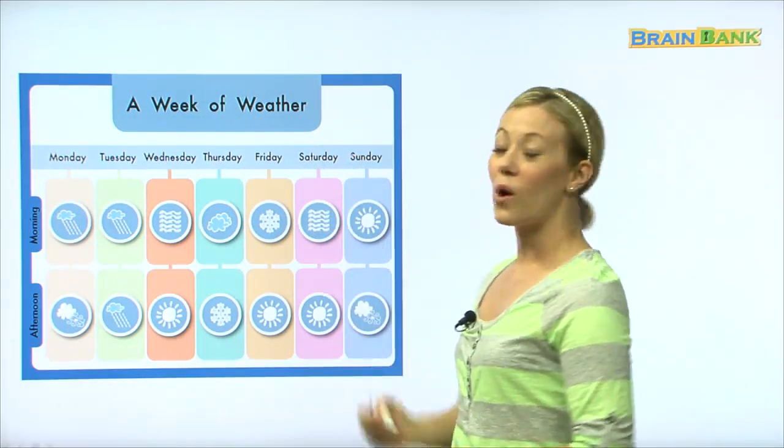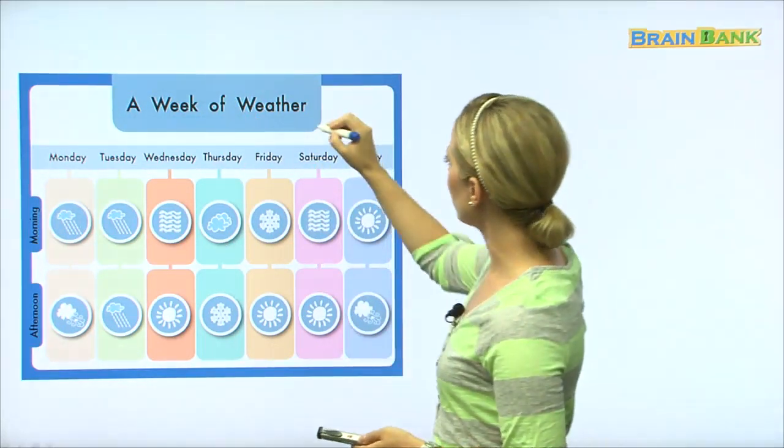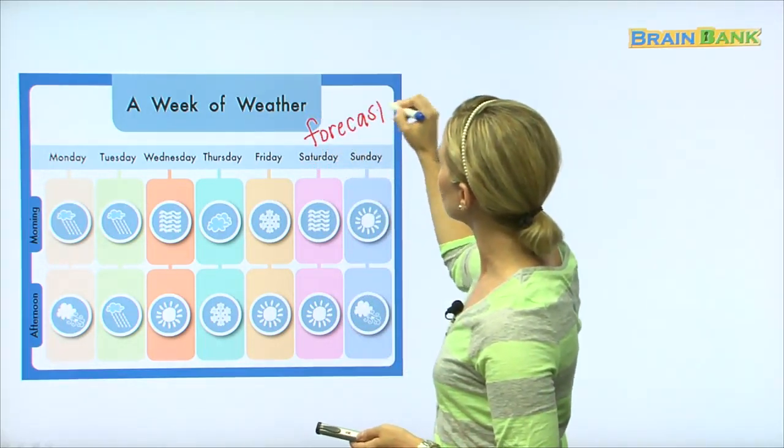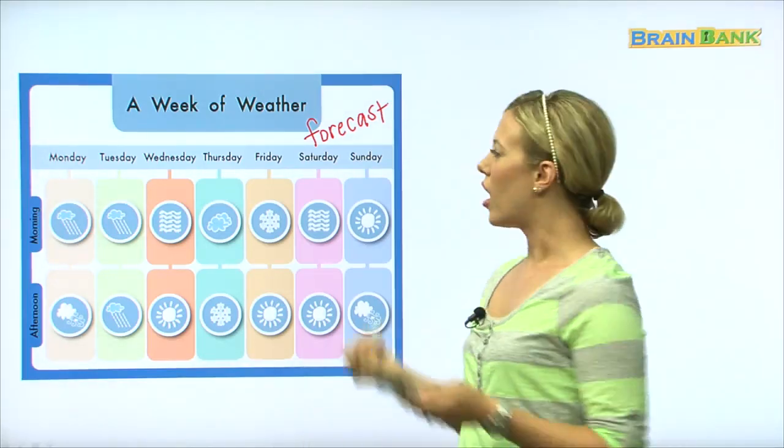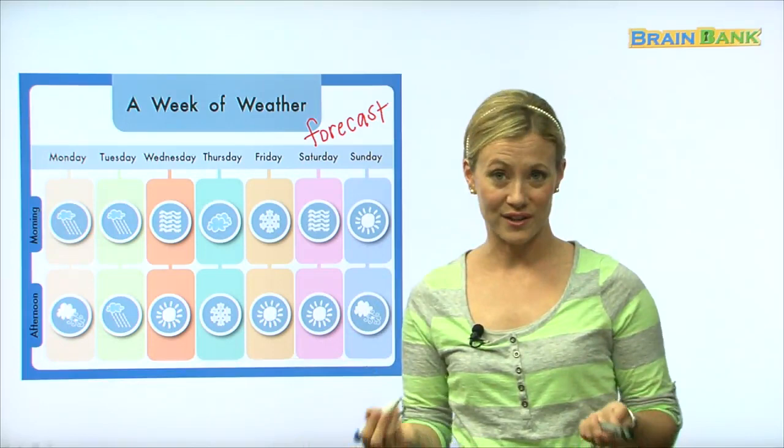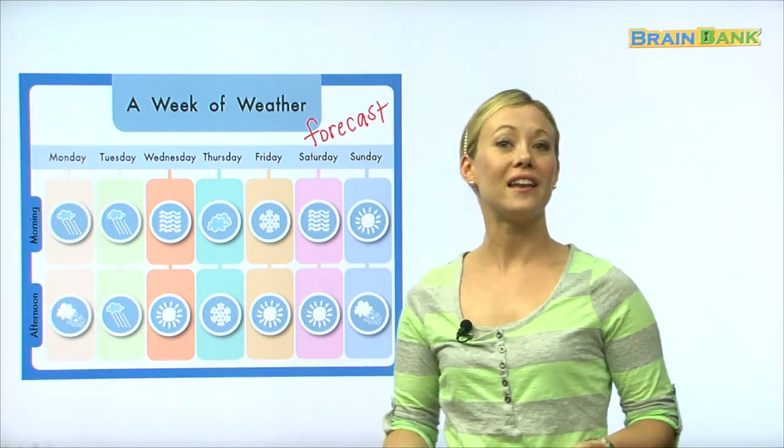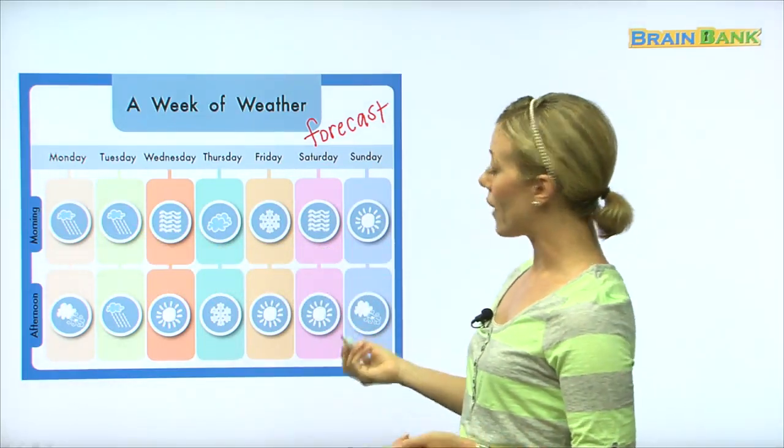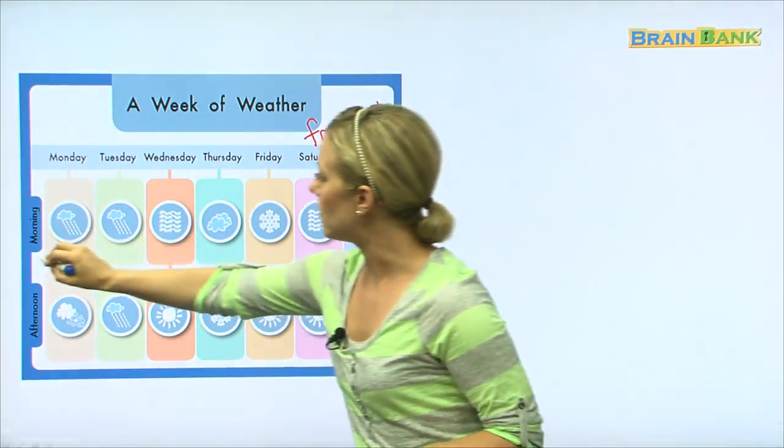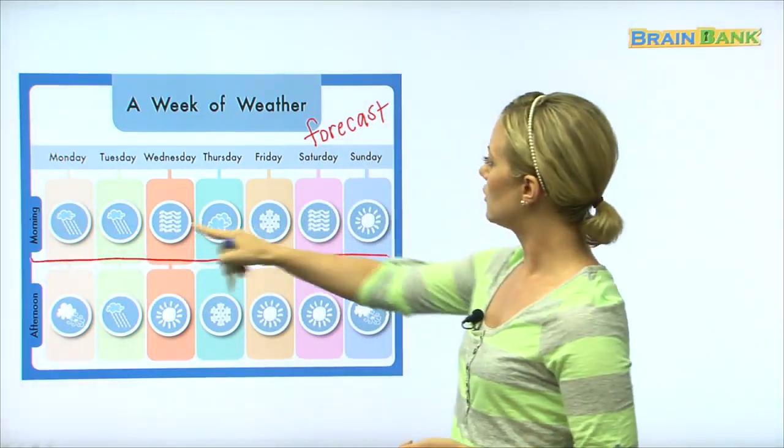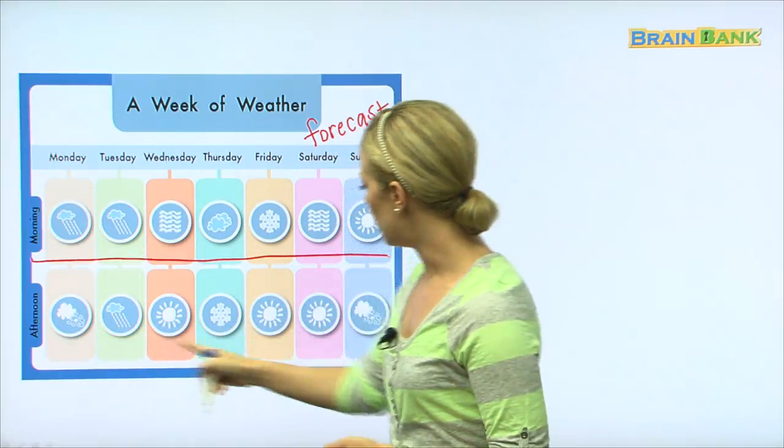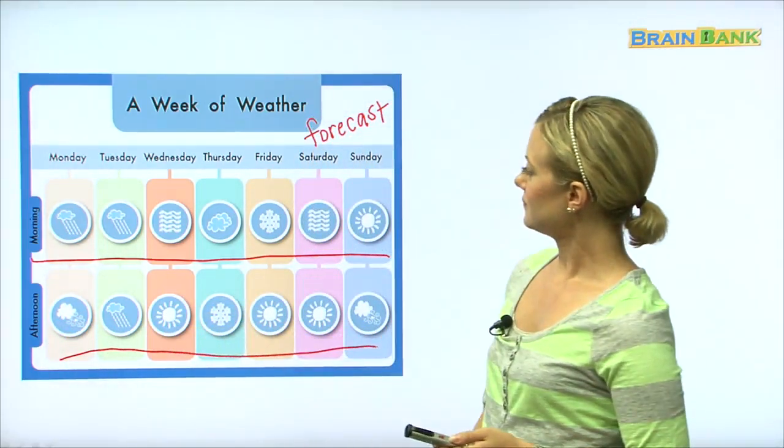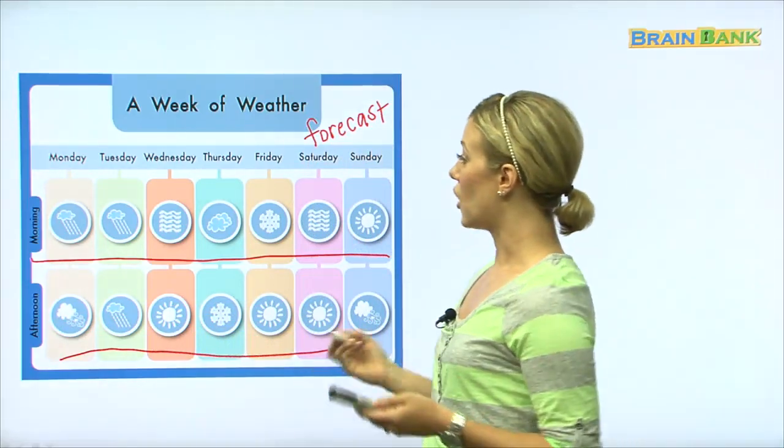Okay, so now we have a week of weather. This is what we would call a weather forecast. A weather forecast. A forecast tells us what the weather is going to be like on a certain day. So here we have the next week and it tells us what the weather is going to be like in the morning. So all of the top ones show the weather in the morning and all the bottom ones show the weather in the afternoon.